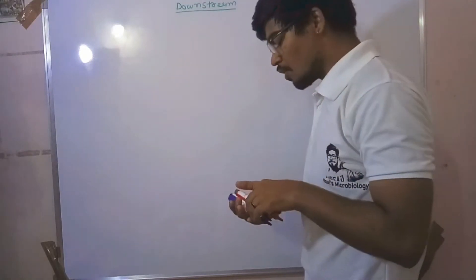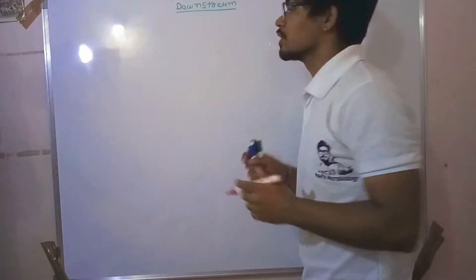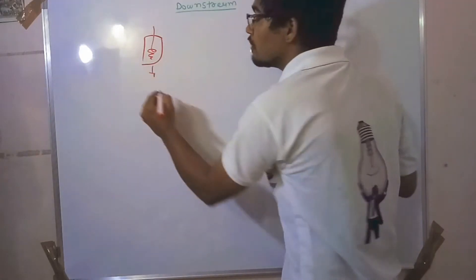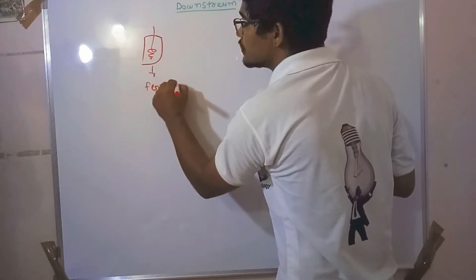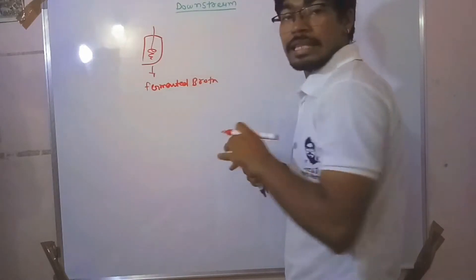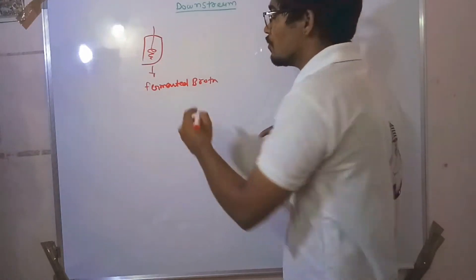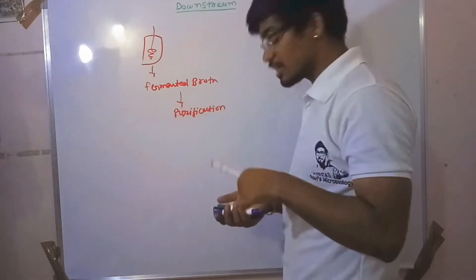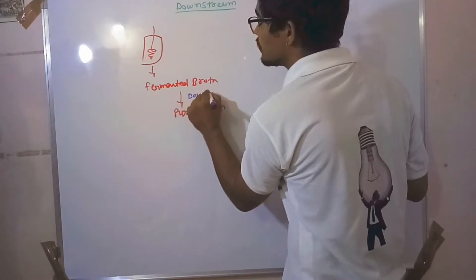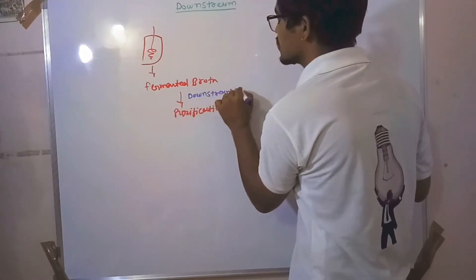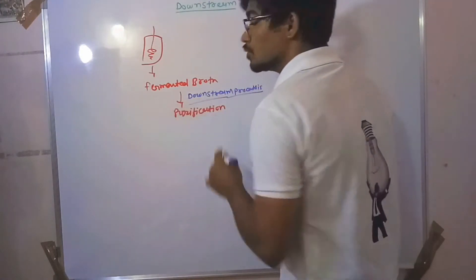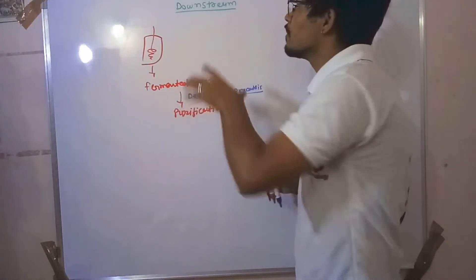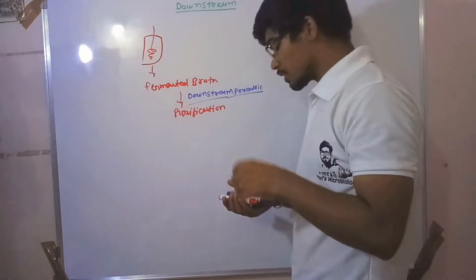Hello friends, in today's lecture we are going to talk about downstream processes. After our fermentation is finished, in our fermented broth there is our product, so for that we are doing purification. This purification process is known as downstream processes. There are lots of processes included in downstream, but which ones we choose depends on the basis of our product and the market value of our product.